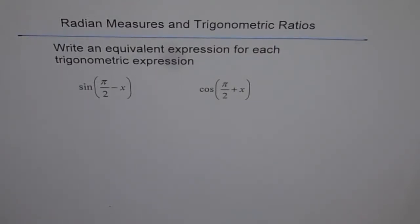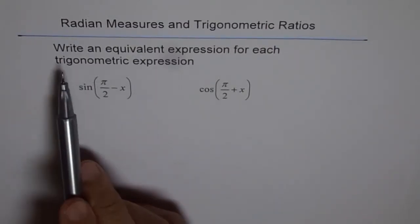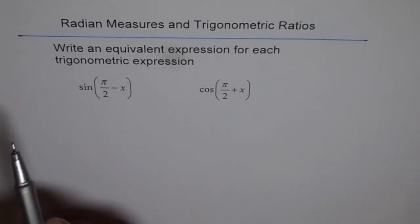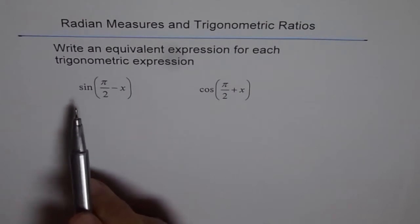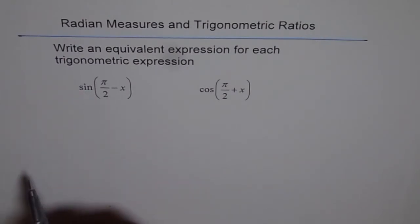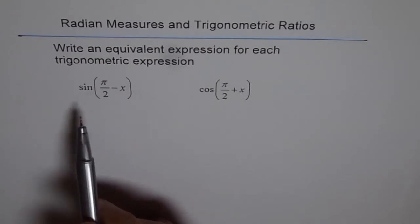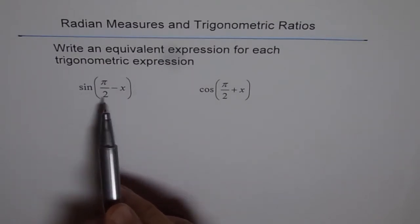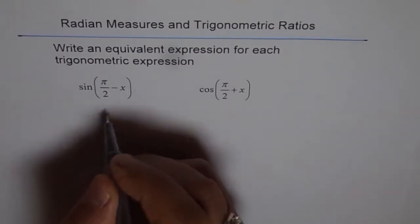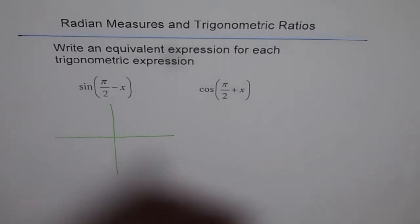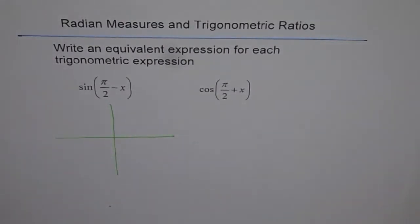Radian measurements and trigonometric ratios. Write an equivalent expression for each trigonometric expression. We have sine π/2 minus x. So equivalent expression, what do we mean? We mean there is something which is similar to this, which gives us the same value. Let's try to see and write down what it could be. We could have more than one answer.